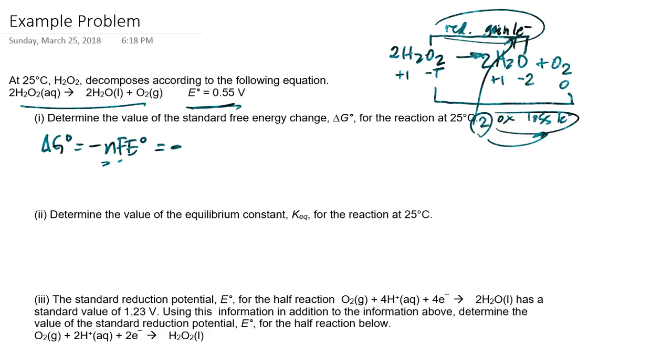If I take that over to my equation, then this would be negative and that's two moles of electrons times Faraday's constant, 96,485 coulombs per mole of electron times the standard cell potential, which is 0.55 volts. The units do look a little bit funny here, but remember that the volt, based on your reading, you should be able to recognize that volts are joules per coulomb.